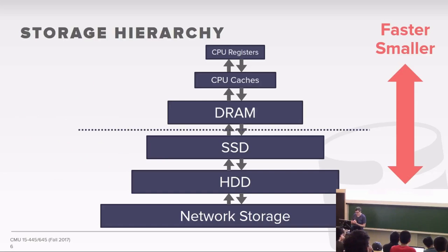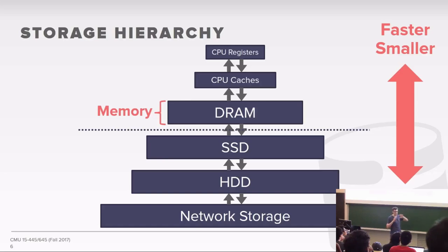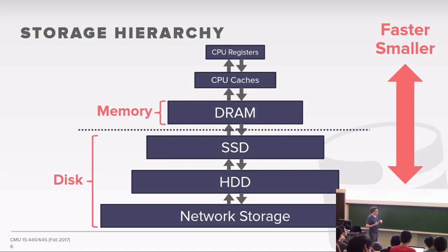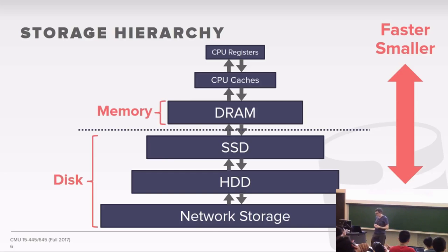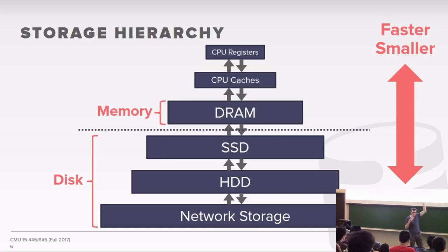For our purposes in this course, we're going to consider DRAM as just memory — anytime I say memory I really just mean DRAM. When I say disk, I mean any of the non-volatile things at the bottom: SSDs, spinning disk hard drives, or network storage. We're focused on how to manage the movement of data from disk up to memory, since the database is going to assume the primary storage location of all the data is at the bottom.